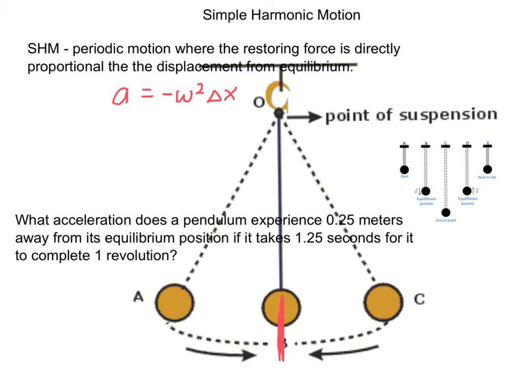Now, the defining equation for simple harmonic motion is: the acceleration that a pendulum, or something on a mass on a spring, or anything that experiences simple harmonic motion, equals negative omega squared — just a constant out in front — times how far away from equilibrium it is at that moment. I want to point out this negative sign — it's very, very critical.